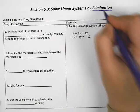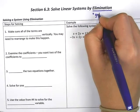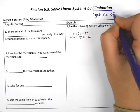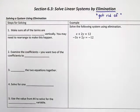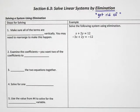To eliminate something means to get rid of one of the variables. We're going to be able to just sort of get rid of one of the variables so that instead of having an x and a y in our equation, we only have an x or we only have a y, and that will allow us to solve the problem much easier.